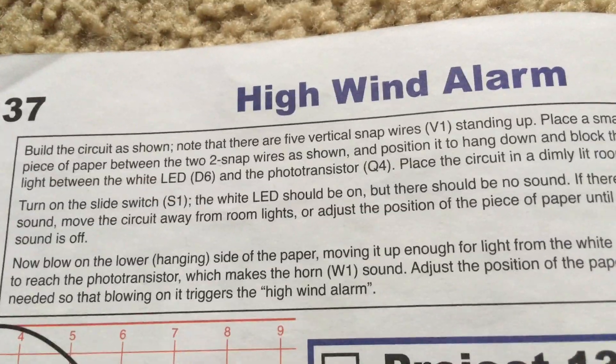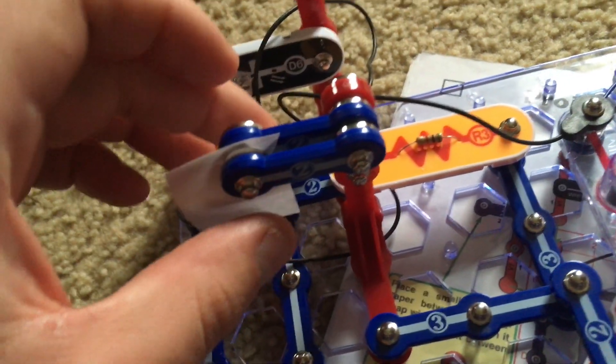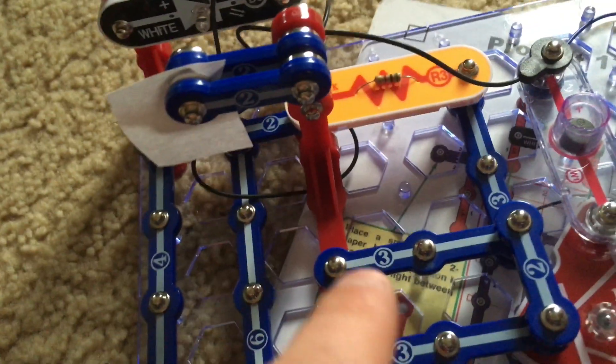Project 137 high wind alarm. You will need a small piece of paper right here and we will insert it between these two snap wires mounted freely on this single vertical snap.